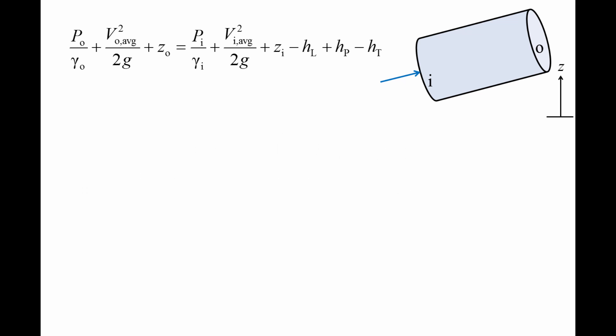Here we have the conservation of energy equation for a control volume with one inlet and one outlet when the flow is steady and one-dimensional. The equation states that the total head at the outlet is equal to the total head at the inlet minus the head loss plus the pump head minus the turbine head.